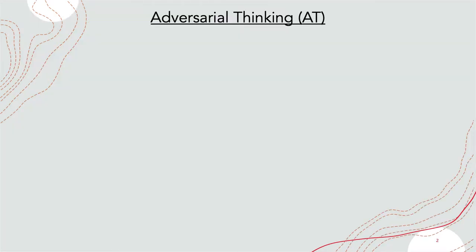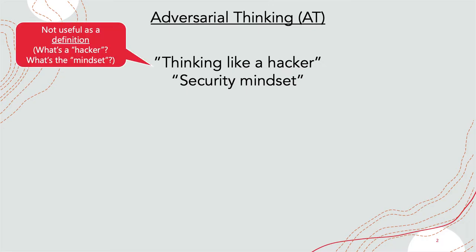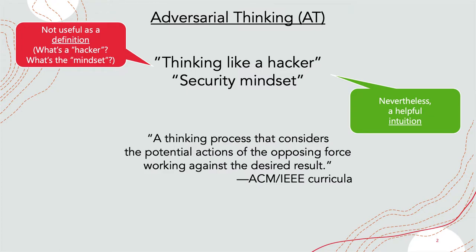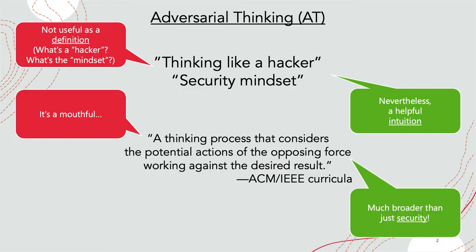Welcome to our talk. Our work is about adversarial thinking. What does that even mean? If you look around you'll find lots of people saying things like 'thinking like a hacker' or calling it a 'security mindset.' These are pretty problematic as definitions — we discuss why in the paper — but they may be useful intuitions. Instead, we like something we read in several ACM and IEEE curricula: a thinking process that considers the potential actions of the opposing force working against the desired result. That's a mouthful, but we like that it's much broader than just computer security.